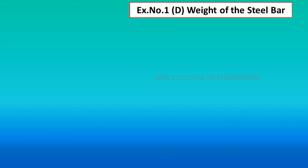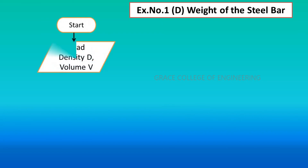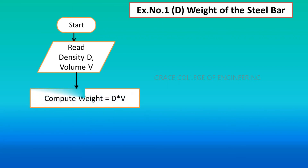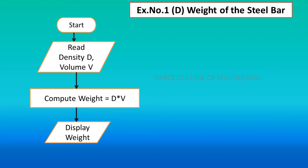The next exercise is the weight of the steel bar. Start the program, then read the density D and volume V. Compute weight = D × V. Display the weight as output. Then stop the program.